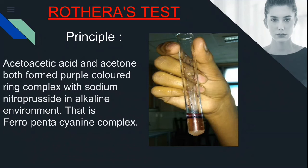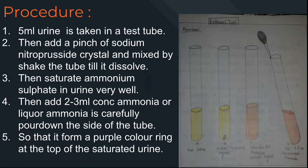Procedure: first, 5 ml of urine is taken in a test tube. Then add a pinch of sodium nitroprusside crystals and dissolve them well by shaking. Then add ammonium sulfate until saturated. After saturation, carefully pour 2 to 3 ml of concentrated ammonia down the side of the test tube. A purple color ring should form between the two liquid layers.